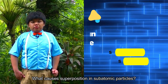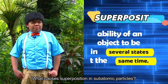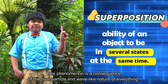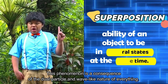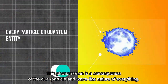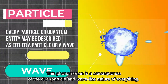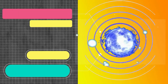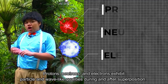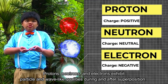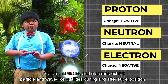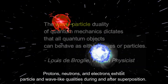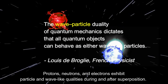What causes superposition in subatomic particles? This phenomenon is a consequence of the dual particle and wave-like nature of everything. Protons, neutrons, and electrons exhibit particle and wave-like qualities during and after superposition.